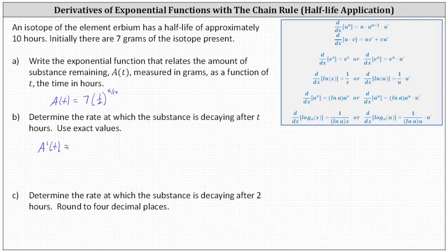Notice the function A of t is an exponential function, where the base is equal to 1 half, and the exponent is not just t, it's t divided by 10. Therefore we'll have to use the derivative formula for the derivative of A to the U, where U is equal to t divided by 10, or 1 10th t, and A is equal to 1 half. The derivative of A to the power of U with respect to x equals natural log A times A to the U times U prime.